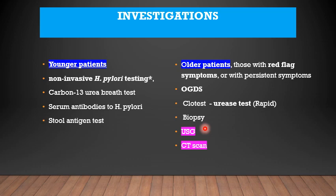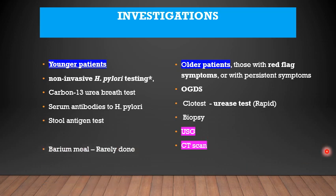Biopsy must be done for all older patients with gastric ulcers. Ultrasound scans and CT scans may be required when the diagnosis is not confirmed. If the diagnosis is elusive, a CT or ultrasound may be done to rule out gallstones, and CT scans can identify malignant disease or growth in the stomach. Barium meal, which used to be a very popular investigation, is rarely done these days.